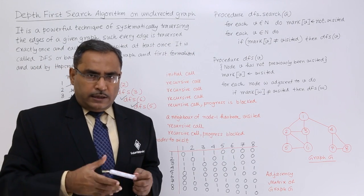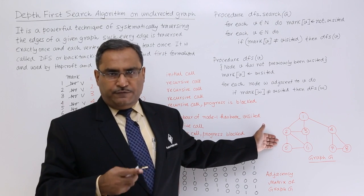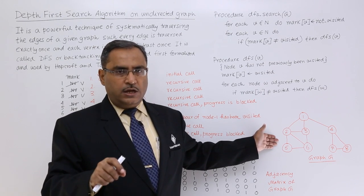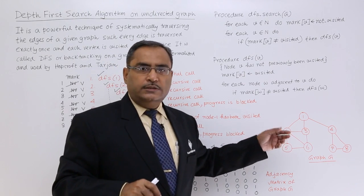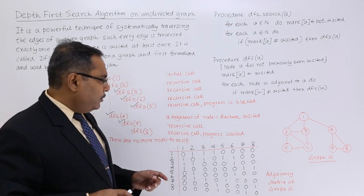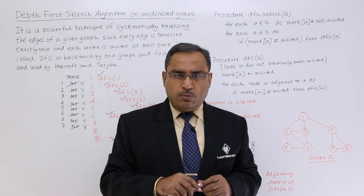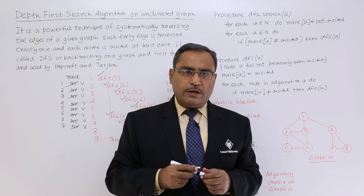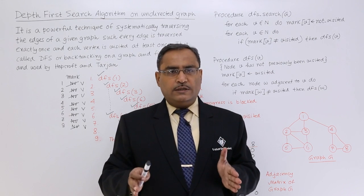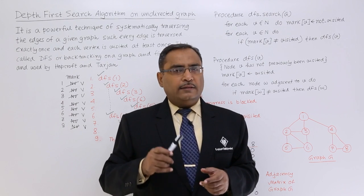In exams, questions may ask for the sequence in which nodes are traversed when executing DFS. In this case the traversal sequence is: 1, 2, 3, 6, 5, 4, 7, 8. If this sequence appears among the answer options, that is the correct one. This covers the DFS algorithm, and in the next videos we will go for other algorithms in graph theory. Thanks for watching.